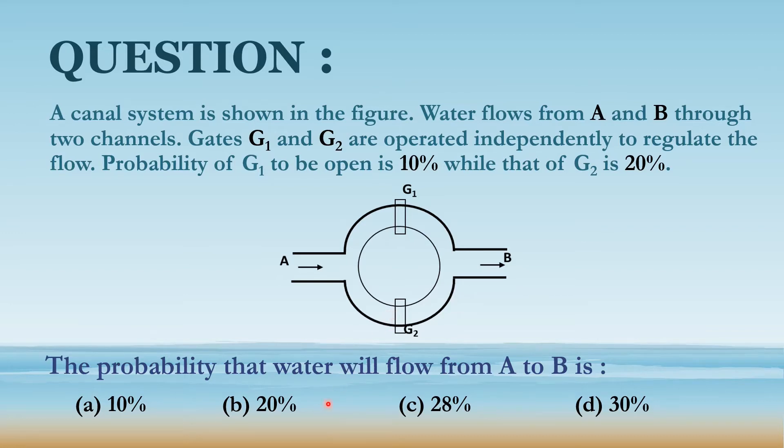The probability that water will flow from A to B is options A 10%, B 20%, C 28% and D 30%.